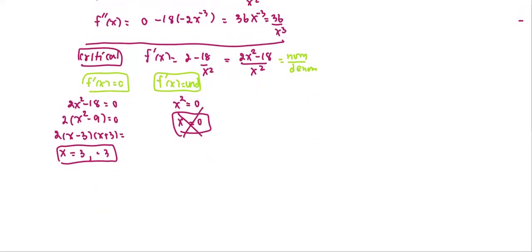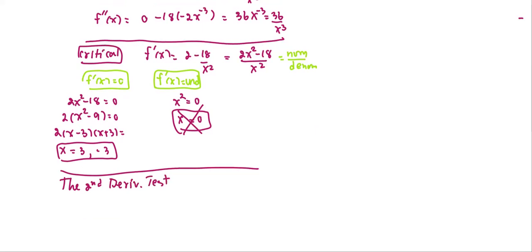Using the second derivative test, we're going to test the value at each critical point for the second derivative. If x equals 3, f double prime at 3 equals 36 over 3 cubed, which is a positive quantity. Since it's positive, this point gives us a local minimum.